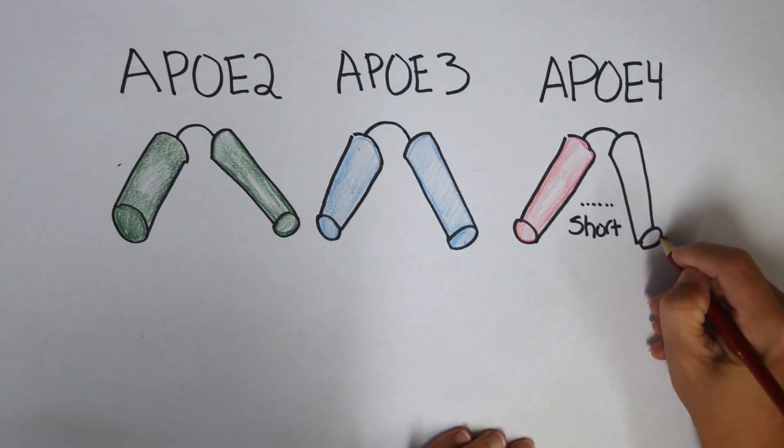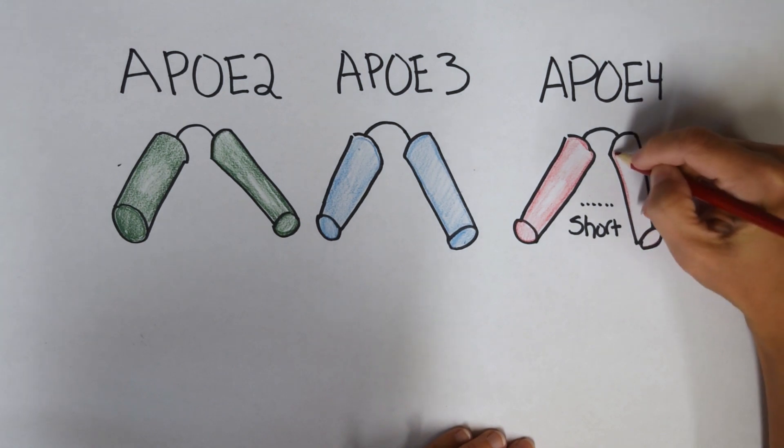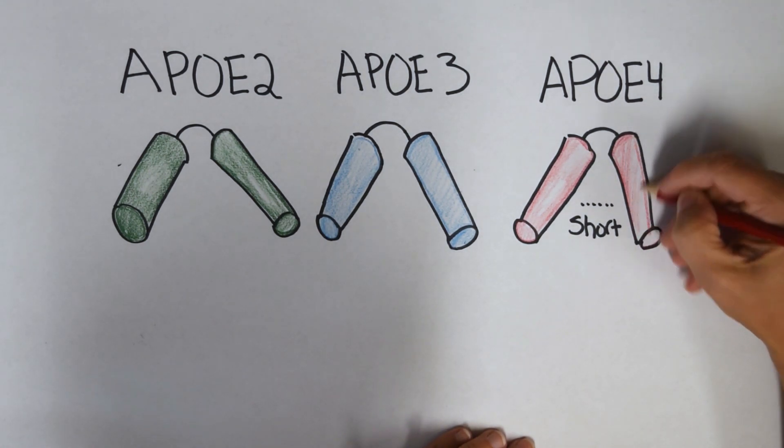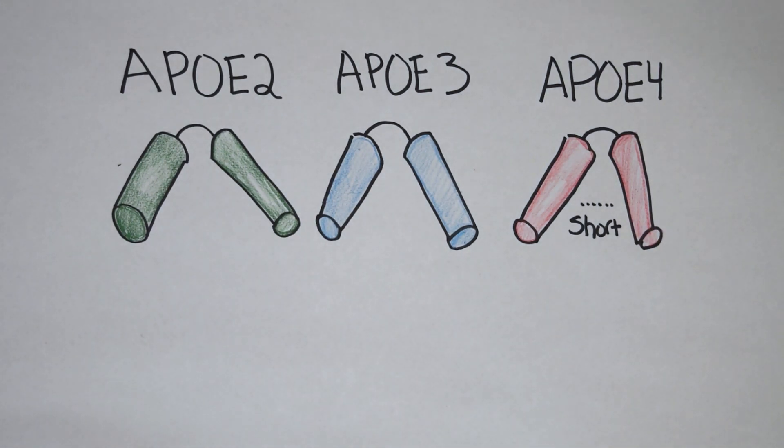I also want to mention that APOE4, I'm showing you that it's shorter here, it's got a smaller bend than the others because of the protein structure. So 50% of people who have Alzheimer's disease have APOE4 genetics.